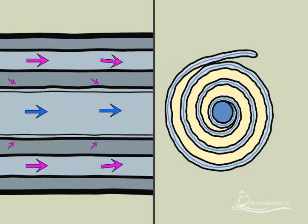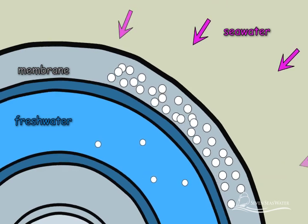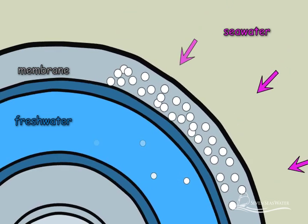The salt particles in the seawater are rejected from passing through the membrane to the freshwater side and remain behind on the concentrated saltwater side.